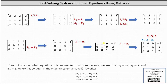Now we need to get a zero in row one column two. We can do this by replacing row one with row one minus row two. Because row two has a 0 in column one and column three, we don't lose the leading 1 in row one, and we also don't lose the 0 in row one column three. Row one minus row two gives us: 1 minus 0 is 1, 1 minus 1 is 0, 0 minus 0 is 0, and negative 1 minus 3 is negative 4.